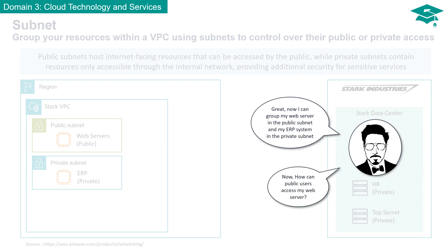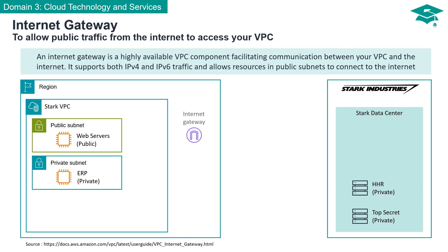Now I can group my web server in the public subnet and my ERP system in the private subnet. How can public users access my web server? Introducing Internet Gateway — an essential component to enable Internet access in your VPC. An Internet Gateway acts as the bridge between your VPC and the Internet. It supports both IPv4 and IPv6 traffic, allowing resources in public subnets to establish connections with the Internet for tasks such as serving web content, receiving updates, or interacting with external services. Internet Gateways ensure that your VPC can securely and efficiently communicate with the global network.